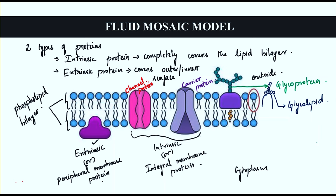To summarize, the plasma membrane mainly consists of a lipid bilayer and two types of proteins: intrinsic (integral membrane) protein, remembered as 'II', and extrinsic (peripheral) protein, which covers the inner or outer layer. The intrinsic protein completely spans the bilayer, allowing molecules to move from inside to outside or vice versa. It also consists of glycoproteins and glycolipids.